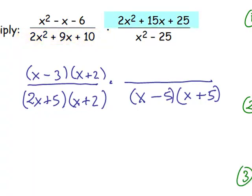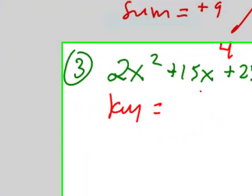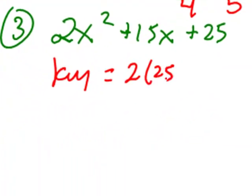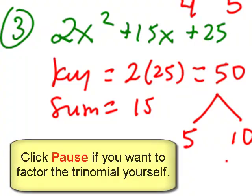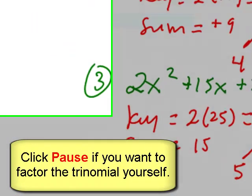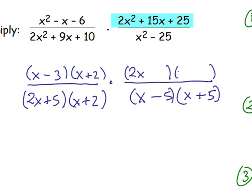Lastly, we must factor the second numerator, 2x squared plus 15x plus 25. The key number is 2 times 25. That equals 50. And the sum number is 15. The factors are 5 and 10. And I'll let you do the factoring on your own. See if it's the same thing that I got. Okay, so now we have all four parts factored.